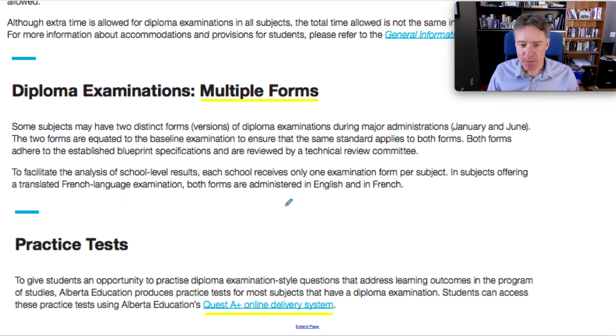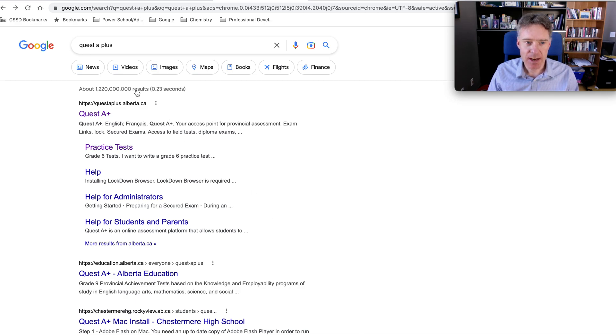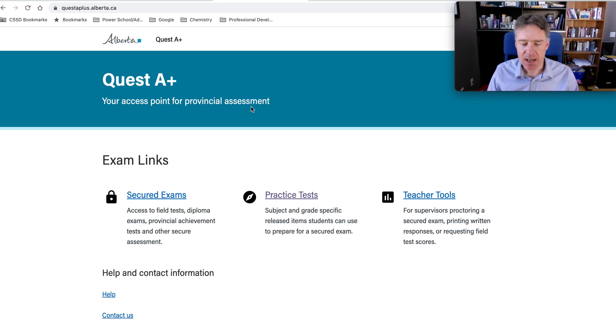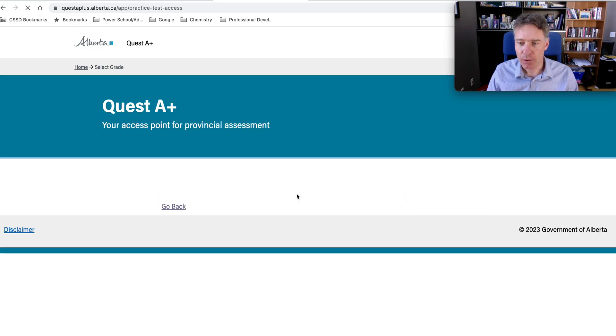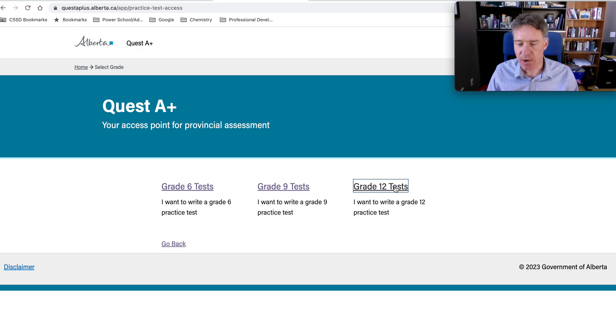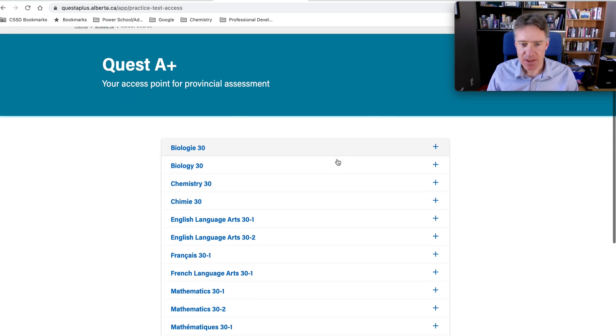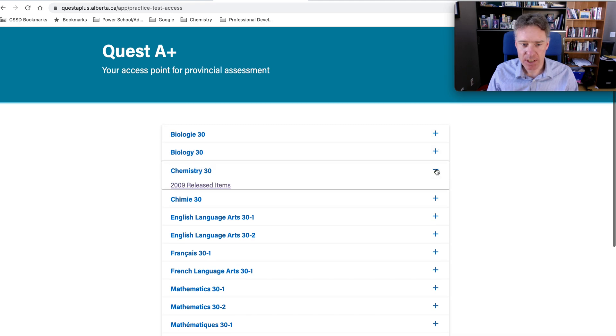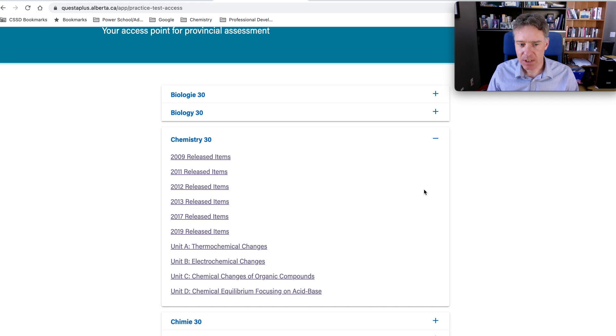There are some practice exams you may want to take a look at. They're on the Quest A Plus system, and these are definitely worth looking at. It's what a lot of teachers and diploma prep courses will use for their questions. If you just Google Quest A Plus, the first link will be questaplus.alberta.ca. Secure exams is what would be used if you're actually writing your English or social exam. You would want to go into practice exams, grade 12 tests, and then you can see all the possible grade 12 courses. Under chemistry, there's a fair bit of released items.